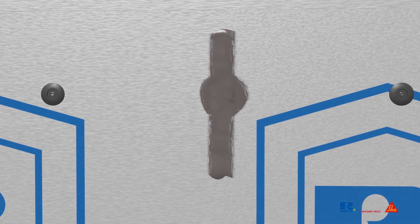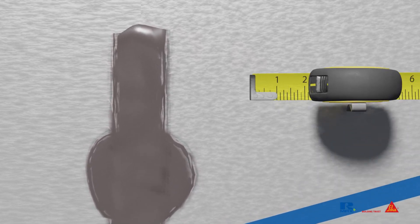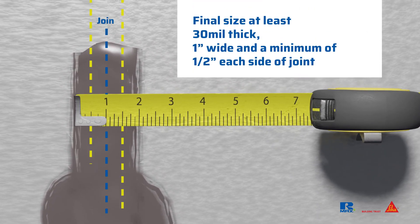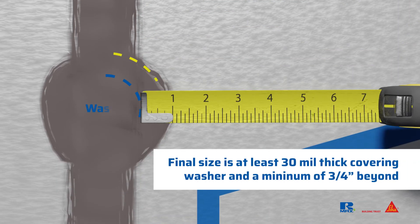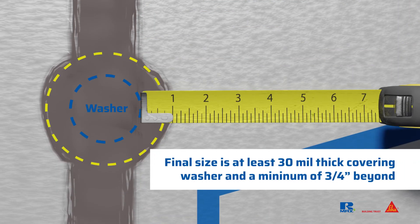Next, confirm the width of the tooled sealant. Using a suitable tool, measure the width where the sealant is at least 30 mils thick. The washer must be fully covered and the width must be at least three quarters of an inch beyond the washer, all the way around.